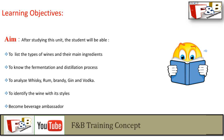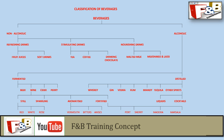The aim and learning objective, as we've spoken about in previous slides, is to list the types of wines and their ingredients, to know the fermentation and distillation process, to analyze whiskey, rum, brandy, gin, and vodka, and to identify wine and their styles. Most importantly, we are working toward becoming a beverage ambassador — a person with very good knowledge on both alcoholic and non-alcoholic beverages, who is able to train fellow colleagues in hotels or restaurants.